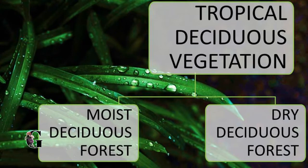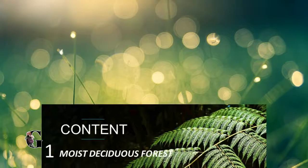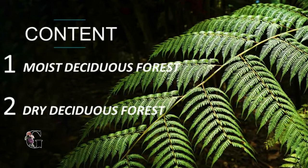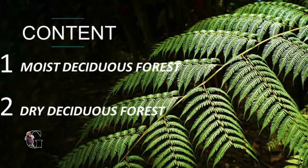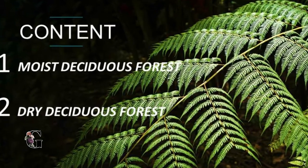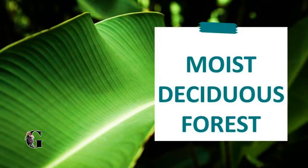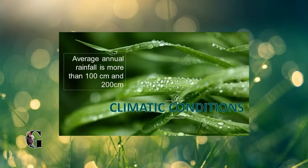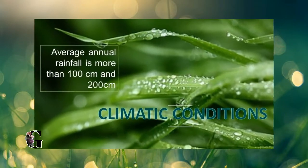Tropical deciduous forests are the most widespread forests of India. They are often classified as moist deciduous and dry deciduous forest on the basis of the availability of water. In this video we'll try to cover both. At first, let's have a look at the moist deciduous forest.